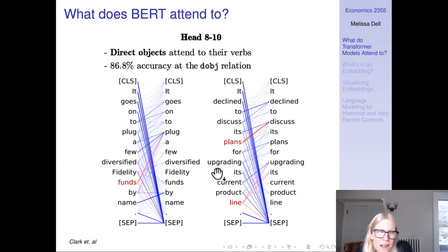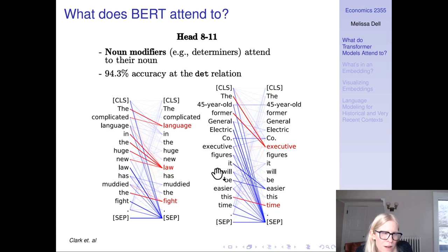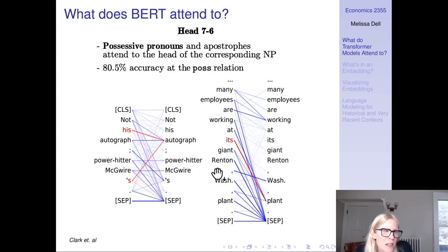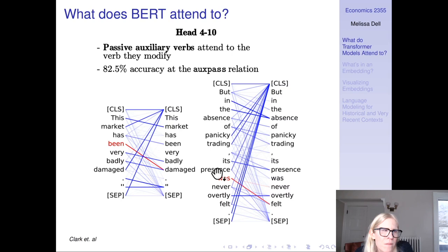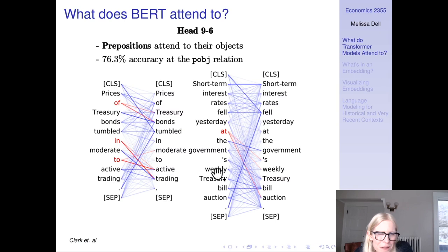At each layer of the transformer there are multiple attention heads. Head 1-1 attends broadly. In the third layer the first head attends to the next token. In the eighth layer the seventh head attends to the separator token. In the eleventh layer the sixth head attends to periods. There are lots more examples: direct objects attending to their verbs with 86.8% accuracy, nouns attending to their modifiers, possessive pronouns attending to the head of the corresponding noun — very high accuracy using that attention head directly.